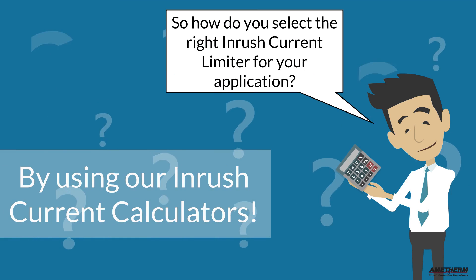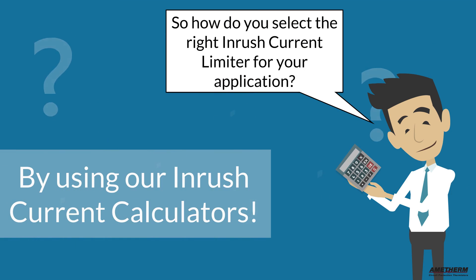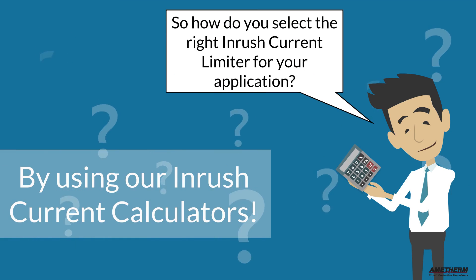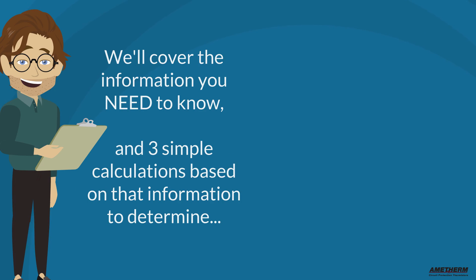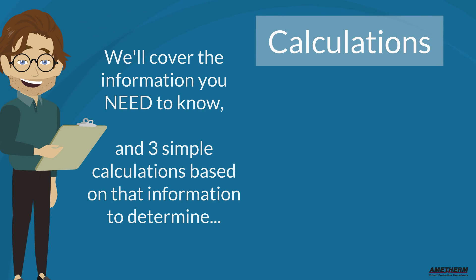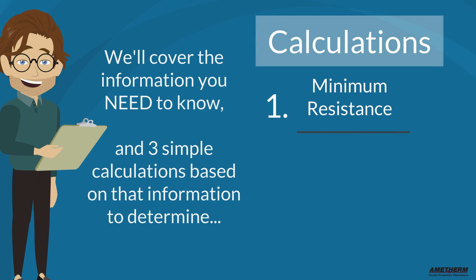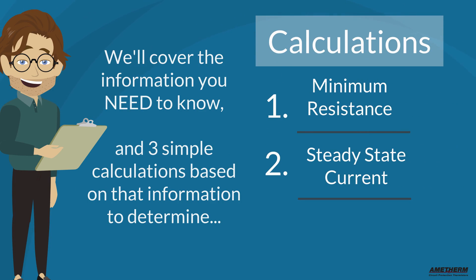Easy! Start by using our inrush current calculators. We'll cover the information that you need to know and three simple calculations based on that information to determine: one, the minimum resistance; two, the steady state current; and three, the maximum energy rating in joules.